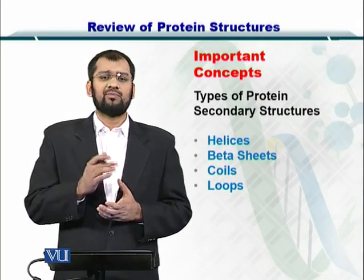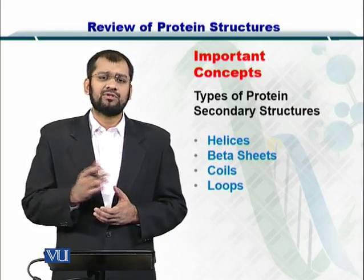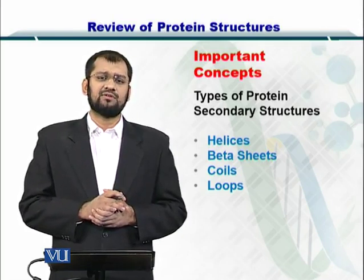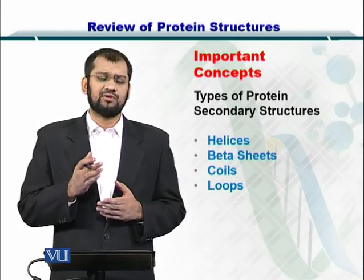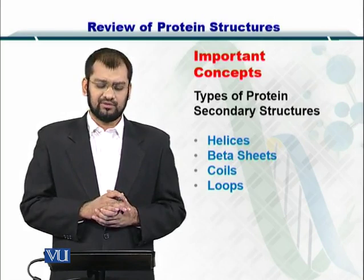There were four general types of protein secondary structures: the alpha helices, the beta sheets, the loops, and the coils.